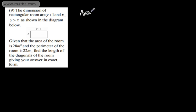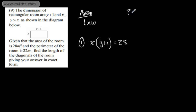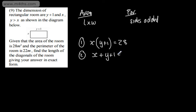We'll set up simultaneous equations. An expression for the area gives equation 1: x multiplied by y plus 1 equals 28. For the perimeter, adding all sides: 2x plus 2(y plus 1) equals 22, which simplifies to x plus y plus 1 equals 11, and therefore equation 2 is x plus y equals 10.